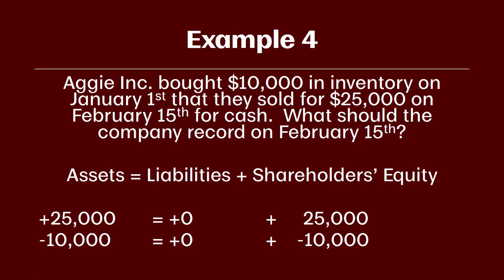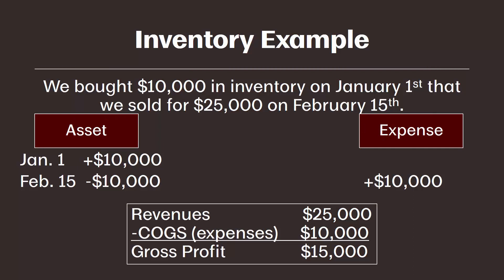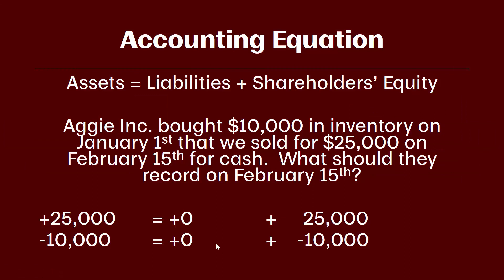This example should look familiar — we actually covered it in the asset video on inventory, though we've added a few more details here like looking at the cash and revenue side of the transaction. On that earlier slide we looked at just the inventory going in, coming out, and moving over to an expense. We also looked at the gross profit piece: revenue increased by $25,000 and cost of goods sold was $10,000, giving us a gross profit of $15,000. That $15,000 increase in gross profit flows through net income all the way up to shareholders' equity.